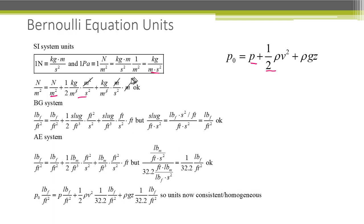The last term is rho g z. Rho is kilograms per meter cubed, g is meters per second squared, and z is in meters. You end up with kilograms per meter second squared, so the units check out here.